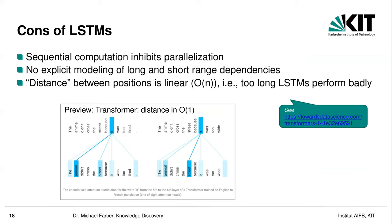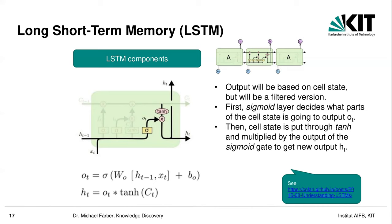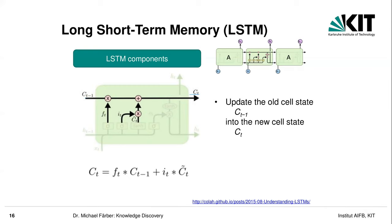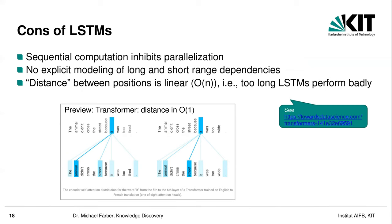The second disadvantage is more conceptual: there's no explicit modeling of long and short range dependencies in LSTMs. I still only have this transmission of cell state C_{T-1} to the next one, but I do not really have direct wires to different states. Finally, the distance between positions is linear — O(n) — which means that too-long LSTMs perform quite badly. If you have very long sentences, for example input of 512 tokens, there's a lot of computation and it does not scale well.